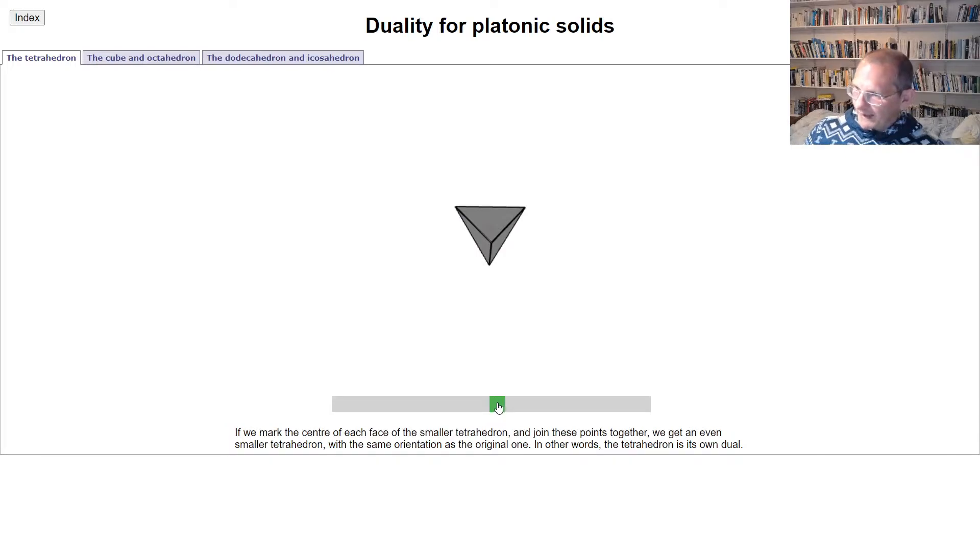We can do the same process again. We take this smaller tetrahedron we've got here and we can link up the centers of the faces of that smaller tetrahedron. Then what we've got here is that you get just a replica of the original, replica of the original tetrahedron that you first started with.